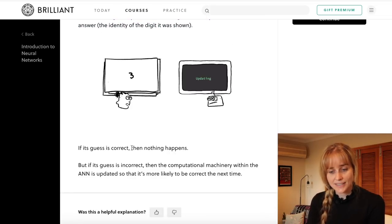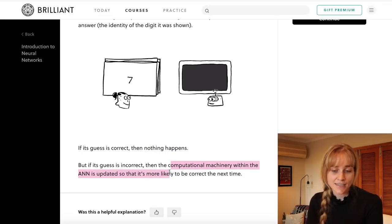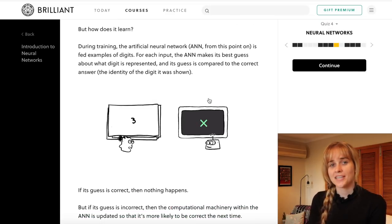If its guess is correct then nothing happens, but if it's incorrect then the computational machinery within the neural network is updated so it's more likely to be correct the next time. Now the code that I'm going to show you isn't actually part of the brilliant course.